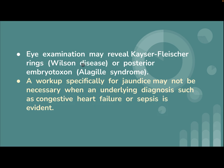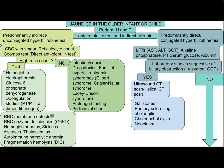Eye examination may reveal Kayser-Fleischer rings in Wilson disease, or posterior embryotoxon in Alagille syndrome. A workup specifically for jaundice may not be necessary when an underlying diagnosis such as congestive heart failure or sepsis is already evident.